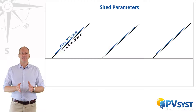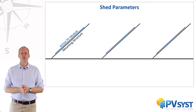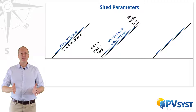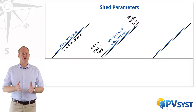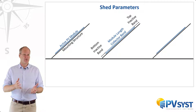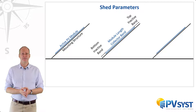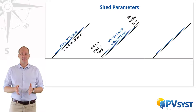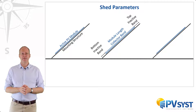Let's look at the main design parameters for such a system. The first is the length of the module and its mounting structure. In PVSyst, we split this into three partitions. The active area of the module that contains solar cells is called the collector band. Then there are the inactive parts, both above and below the collector band.